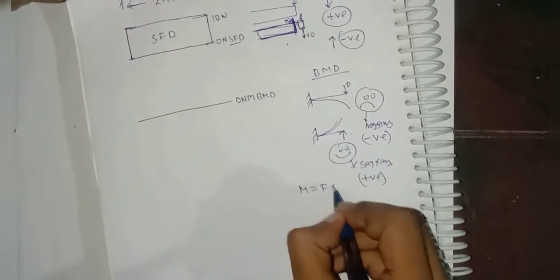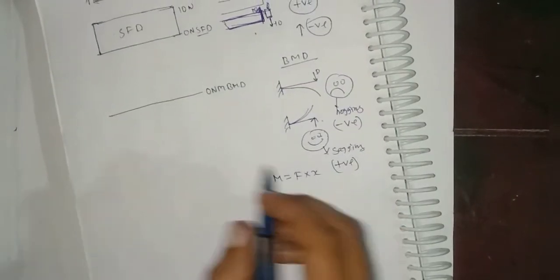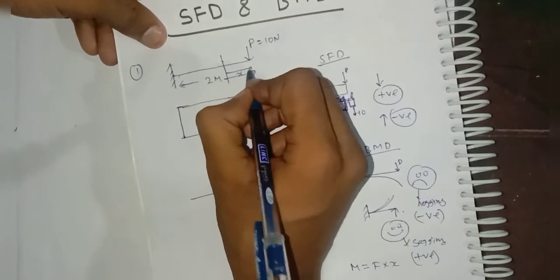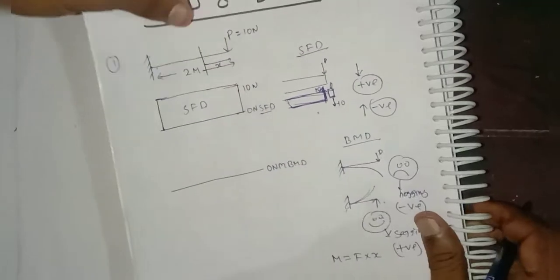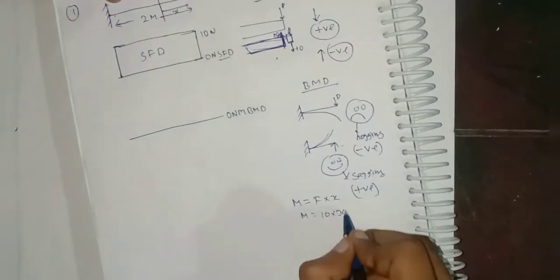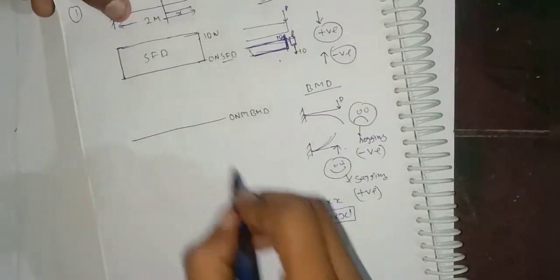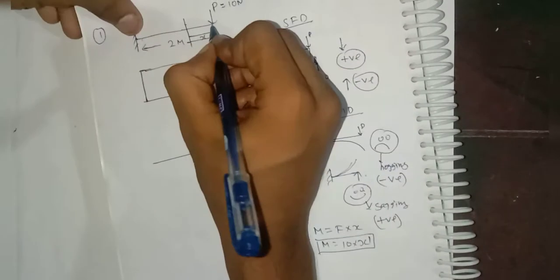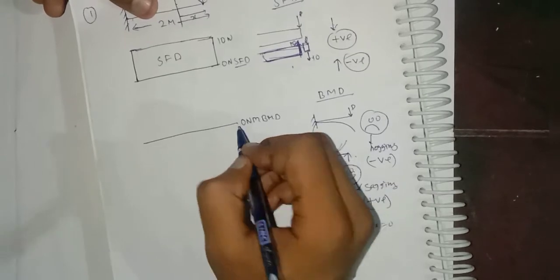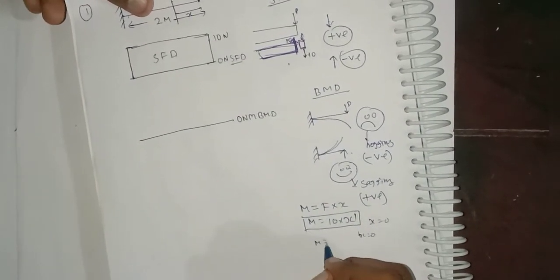For bending moment, moment is nothing but force into distance. We consider a section up to distance X from the free end. The moment M equals force times X. Since this is X to the power one, the curve will be a straight line or linear. At the point where P is acting, the distance X is zero, so M is zero there. We start drawing from that point.